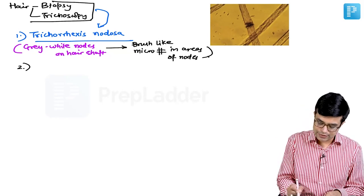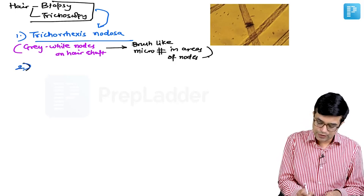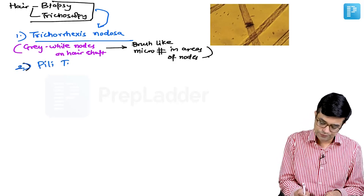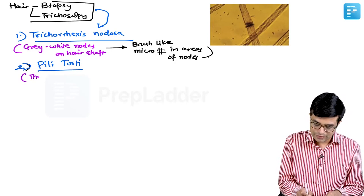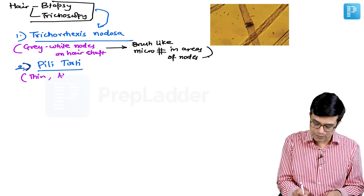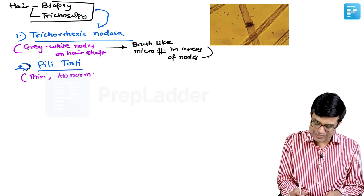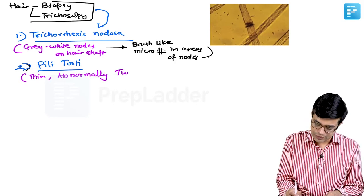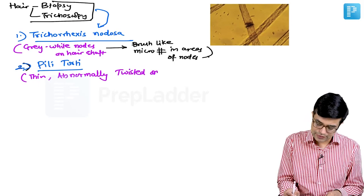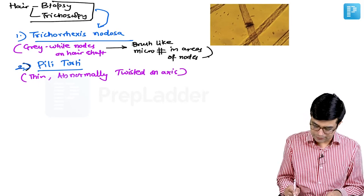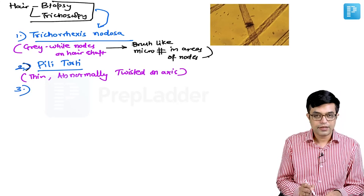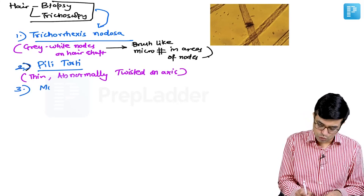The second pattern is pili torti. The name itself is saying the hair are thin and they are abnormally twisted upon their axis. That is called pili torti. And the third pattern is monilethrix.